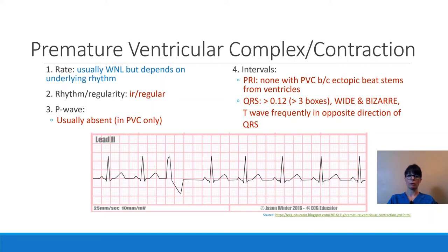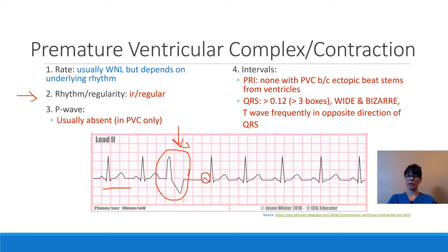The rate is usually within normal limits, but it depends on the underlying rhythm. The normal beats may look typical, but a strange, bizarre complex in the middle makes the six-second rhythm strip irregular. The P-wave for PVCs is usually absent for that specific complex — the underlying rhythm may have P-waves, but the PVC itself has no P-wave and no PR interval, because the ectopic beat stems from the ventricle and does not represent any atrial depolarization.